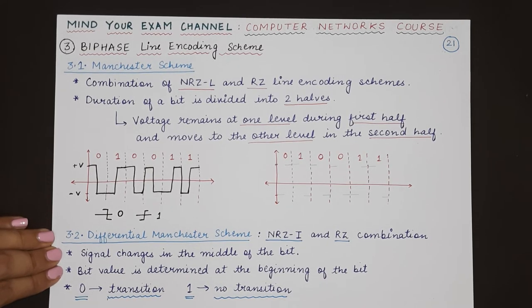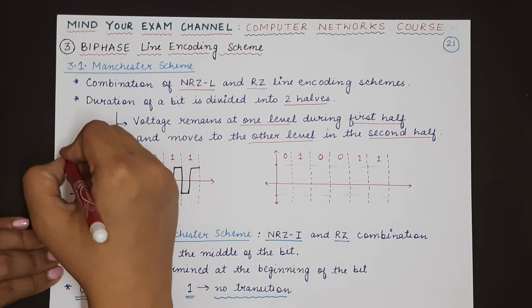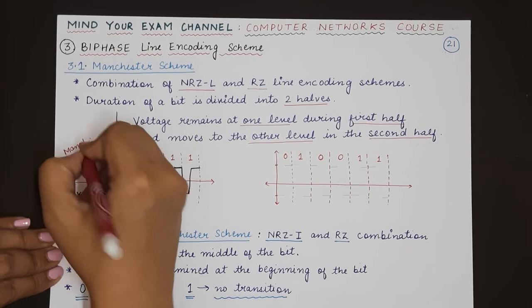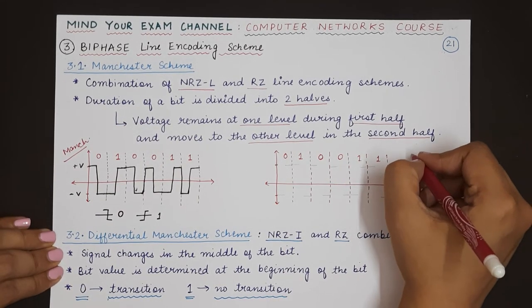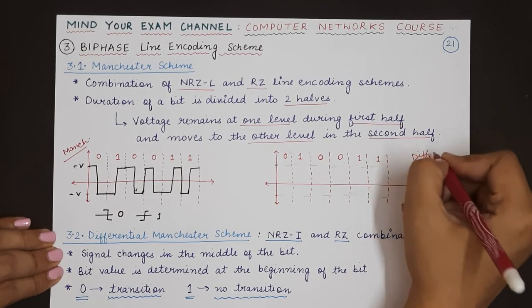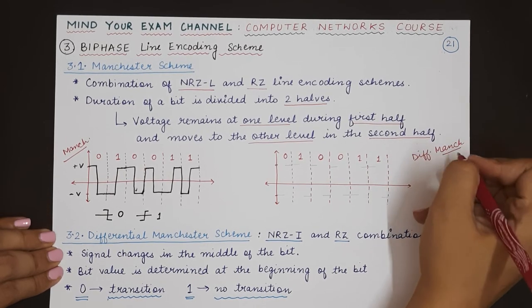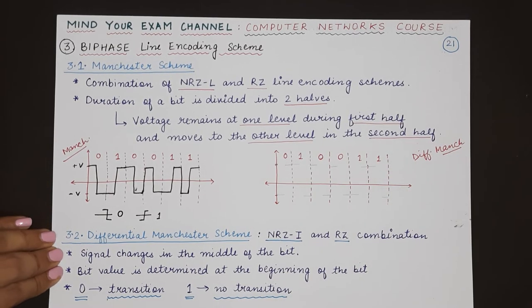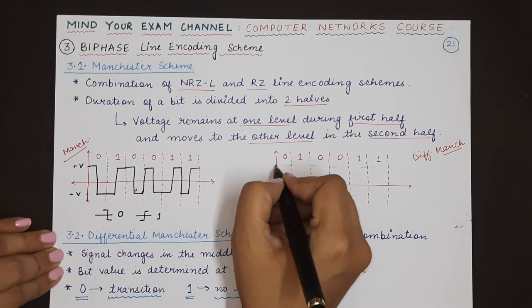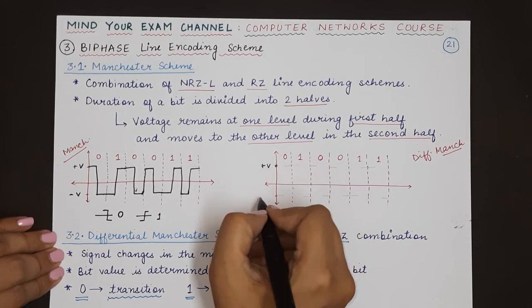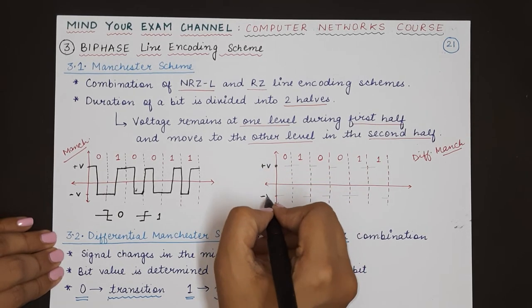Now let's compare: the previous case was for Manchester scheme. In differential Manchester, to encode the same data (0, 1, 0, 0, 1, 1), we start from positive voltage, and the first bit we see is zero.